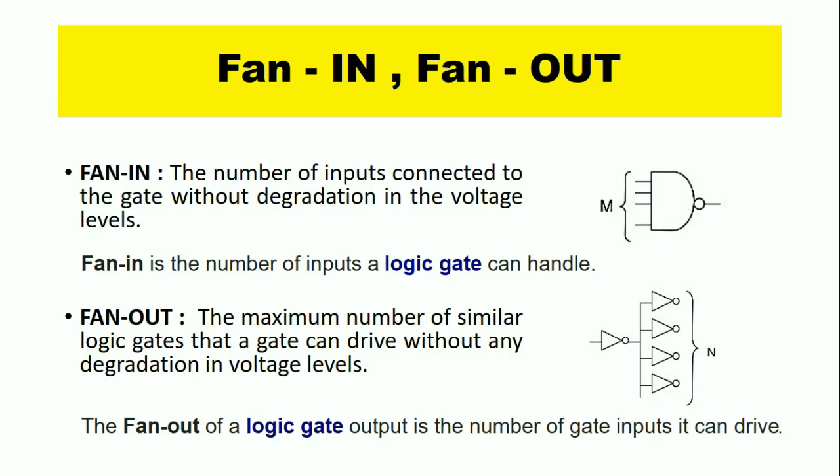Fan-in is the number of inputs connected to the gate without degradation in the voltage levels. For example, here we have a gate, and we are giving M number of inputs. These M number of inputs are given without degradation in the voltage levels. These M number of inputs can be handled by the logic gate. This is called fan-in.